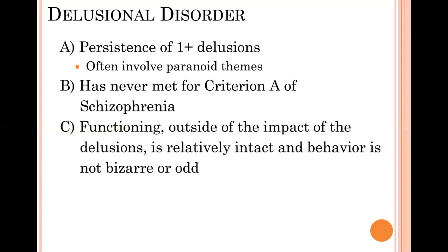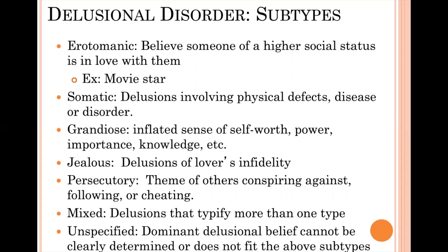For delusional disorder, we look at the subtypes of delusions. Erotomanic delusions involve the belief that someone of a much higher social status — such as a famous movie star or the president — is in love with them, even though they have never met. Somatic delusions involve beliefs about physical defects, disease, or bodily disorder, such as believing that foul odors are emanating from their body.